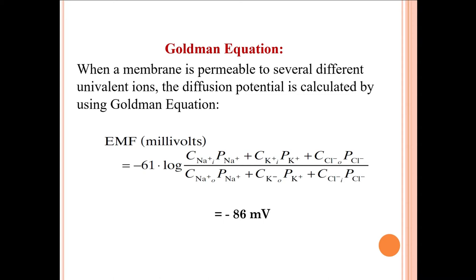We have another equation to calculate the membrane potential at equilibrium when the net diffusion of ions stops — the Goldman equation. The Goldman equation gives the liberty to include more than one ion. Sodium, potassium, and chloride ions are used together in the Goldman equation, and its calculated value for the resting membrane potential is minus 86 millivolts.